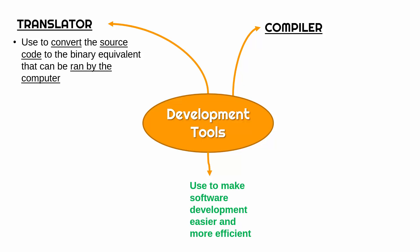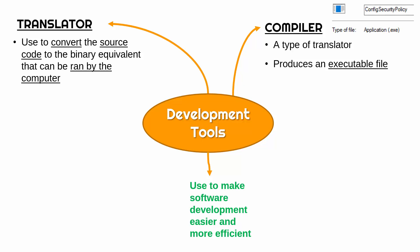A compiler is a particular type of translator which is important to know about, because a compiler produces an executable file. That means it makes a file which on its own can be used to run the program. As a developer, once you compile your code, all you need to do is send the .exe file to the user and they can run your program. The source code can't be seen, so the compiler produces a file without the source code in it — that's how closed source programs are made.